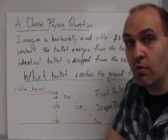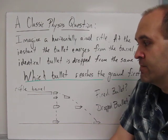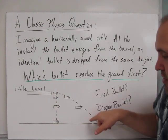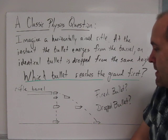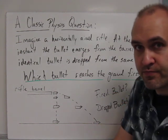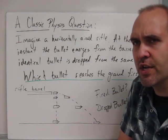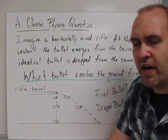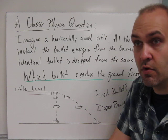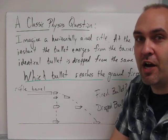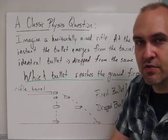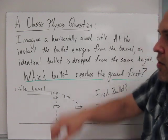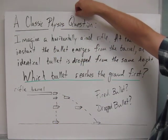And the question that's always asked to new physics students is which bullet reaches the ground first? Is it the one that's fired or is it the one that's dropped? Ask yourself that question. What makes the best sense to you? Is it the one that's fired that hits the ground first because it's going faster? Is it the one that's dropped that hits the ground first because it covers a shorter distance?